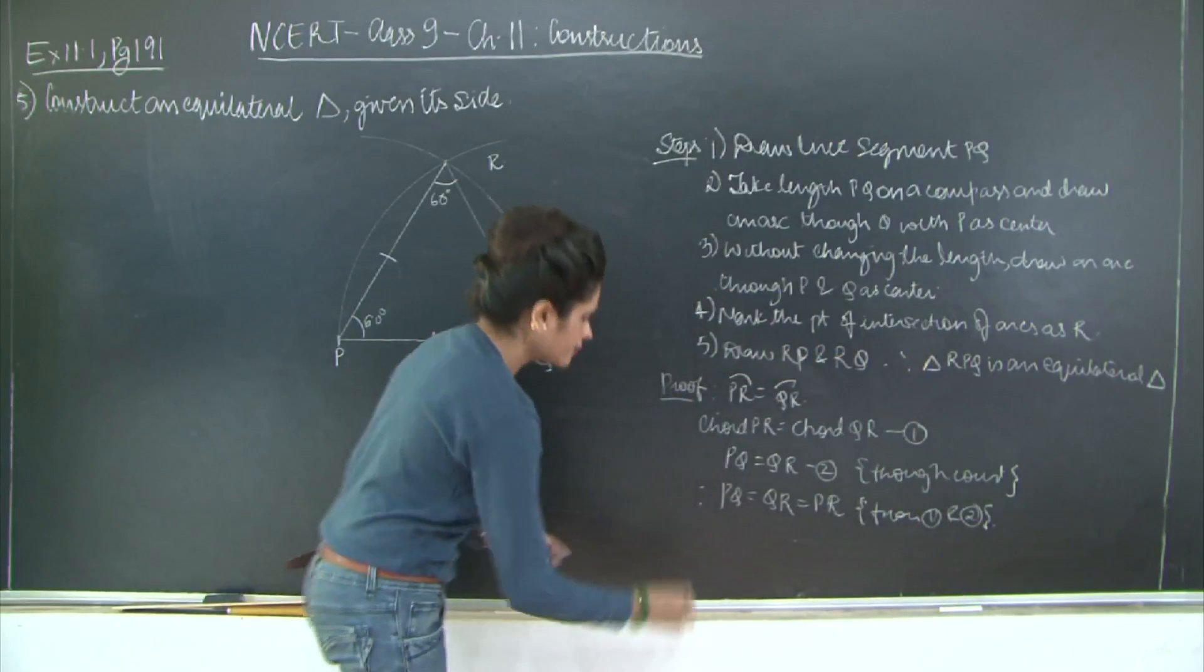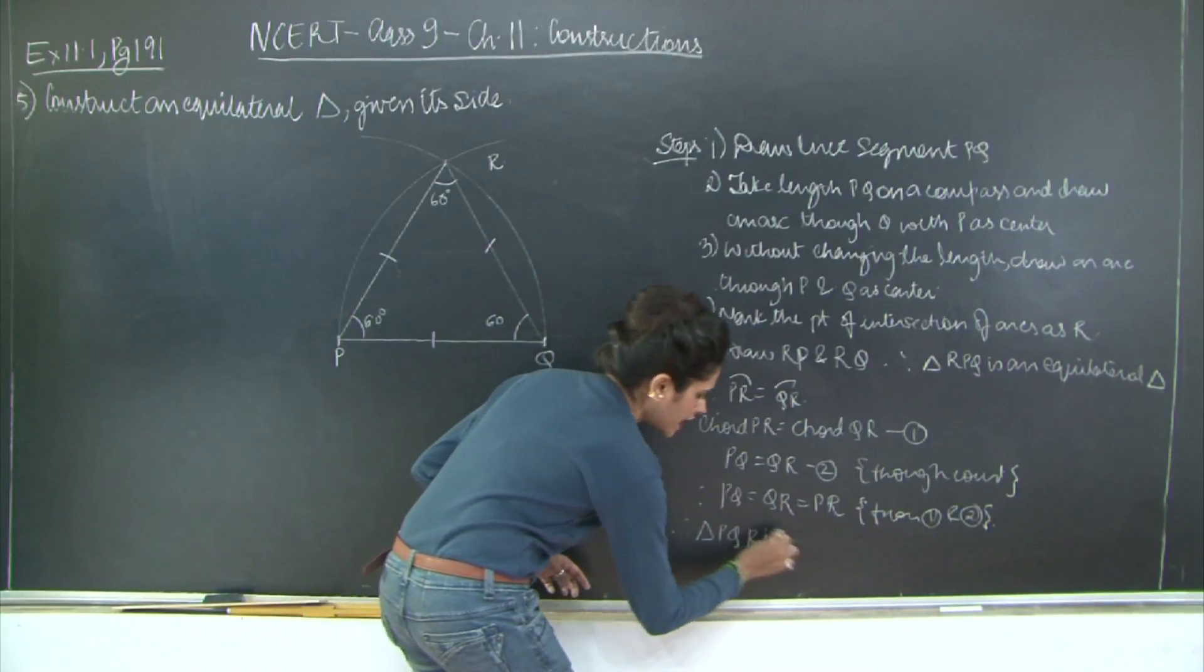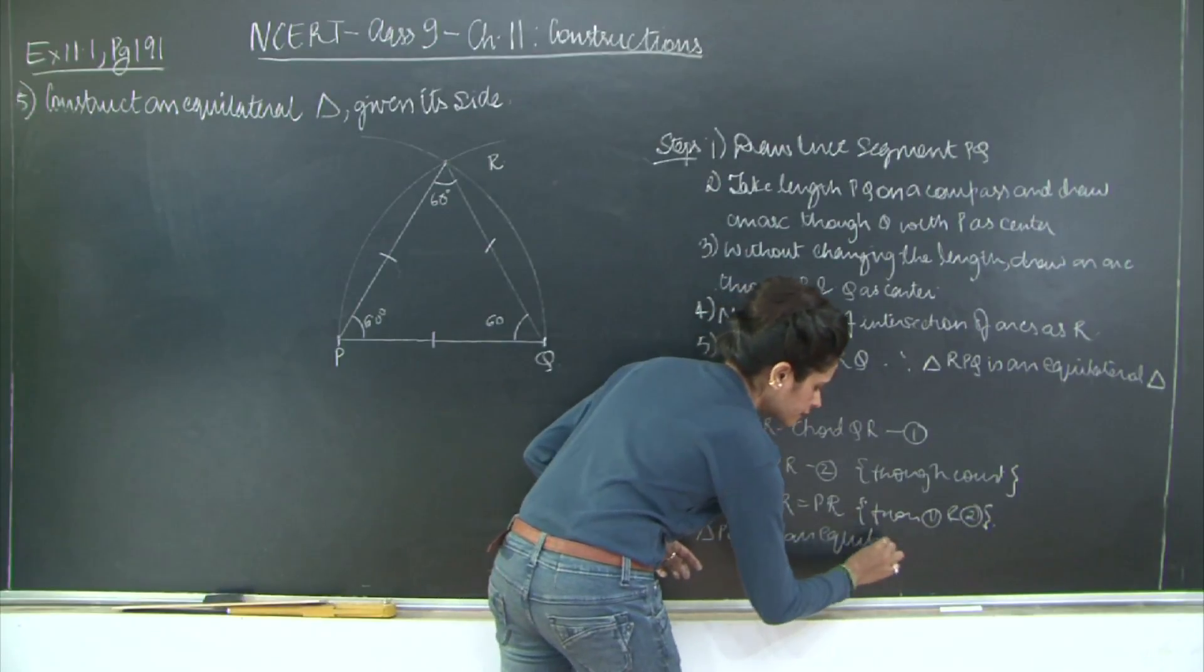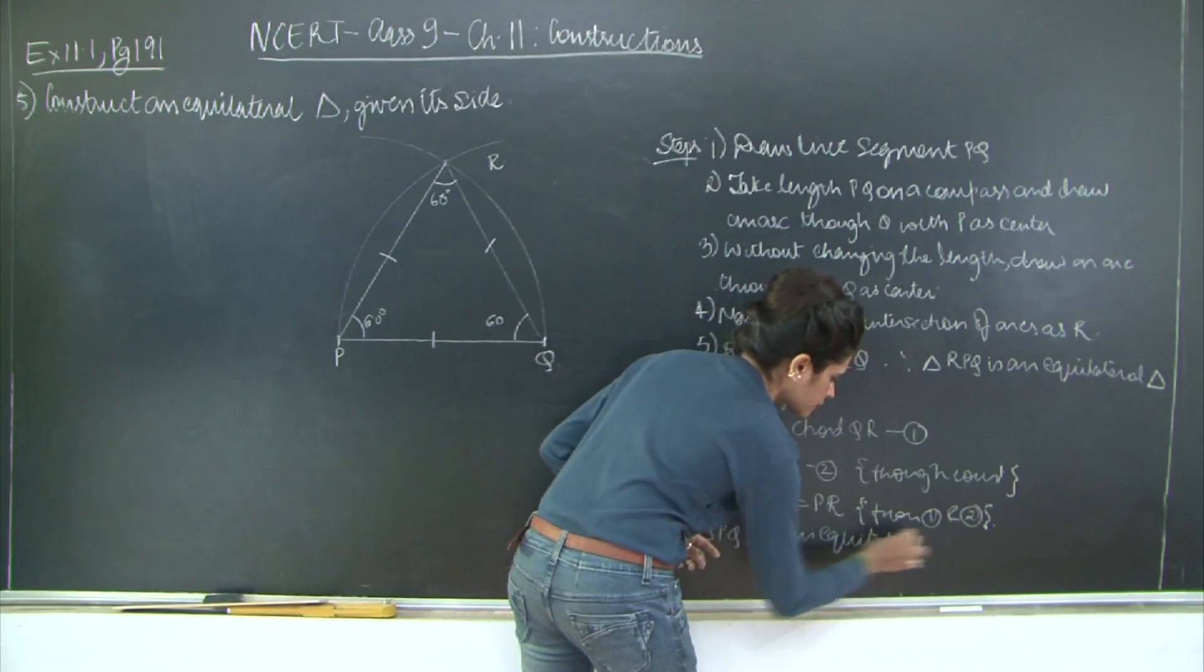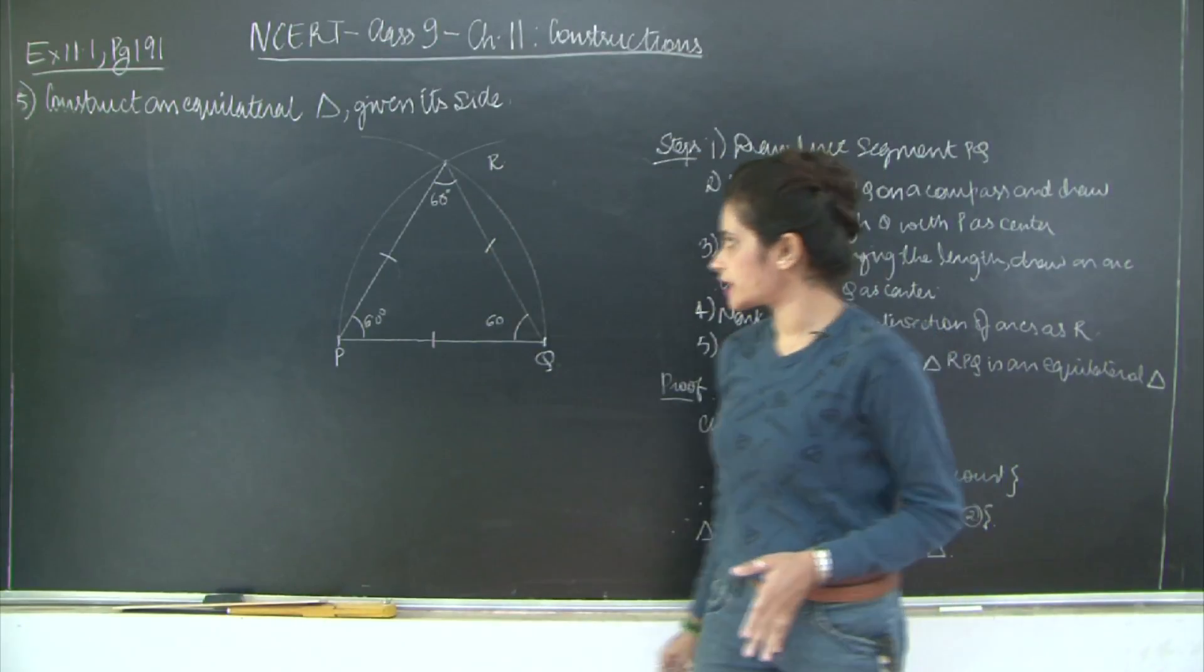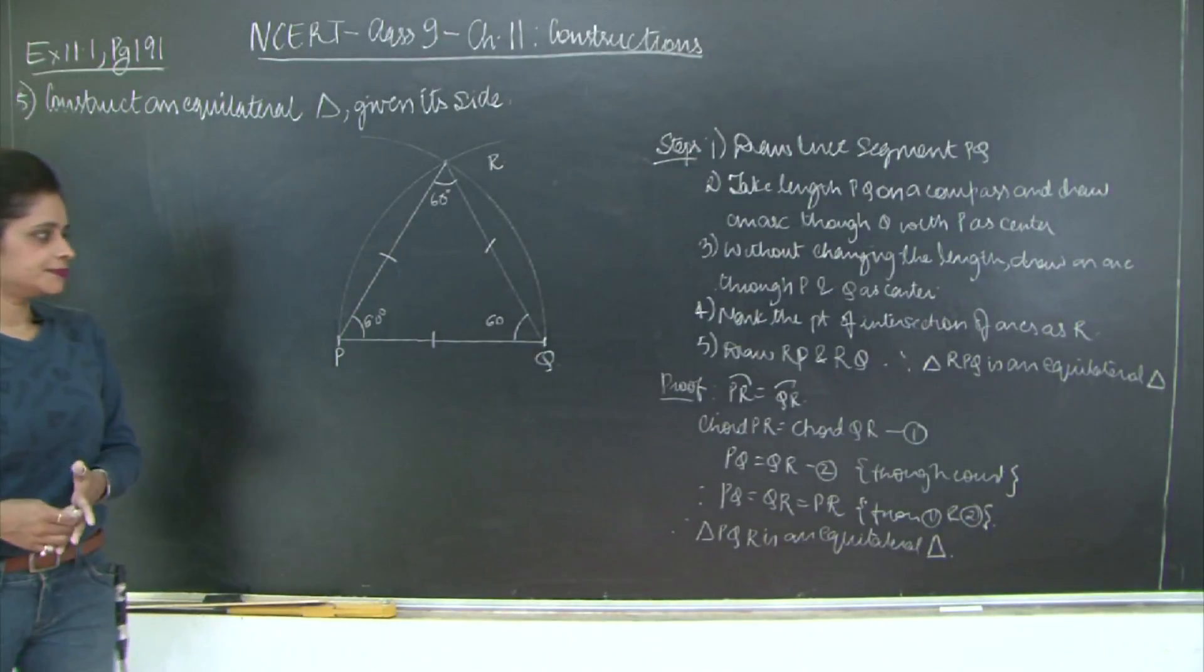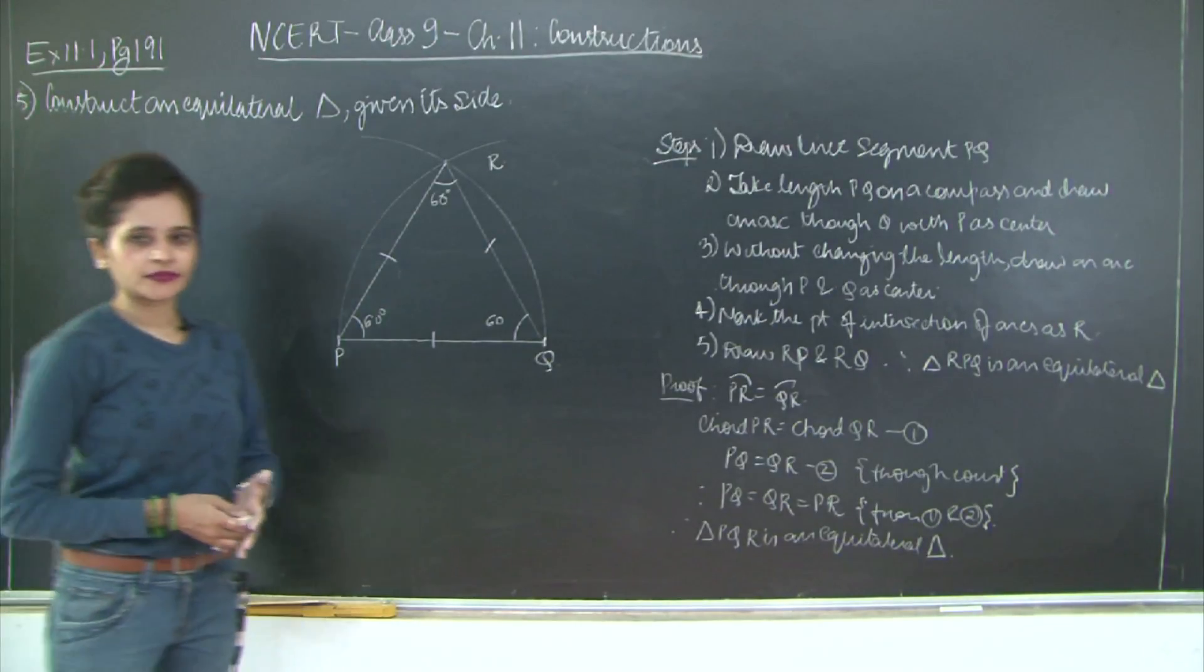Therefore, triangle PQR is an equilateral triangle. So please take a look at the construction as well as the solution. Thank you.